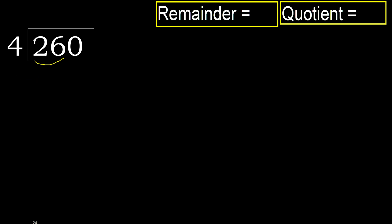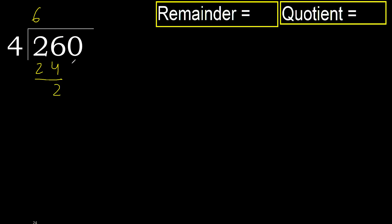With 26, find which number multiplied by 4 is nearest to 26 but not greater. 4 multiplied by 7 is 28 — 28 is greater. Multiply by 6: 4 times 6 is 24. 24 is not greater, so subtract: 26 minus 24 equals 2.